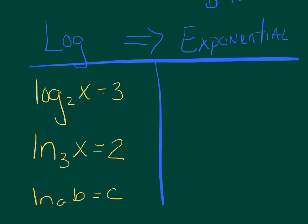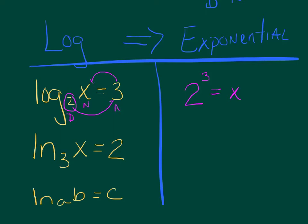We'll go a little log to exponential form and see what you've got for a review. These are obviously in log form — they all have the word log, whether it's natural log or log. Exponential form should have an exponent. I'll do the first one with you, then you're on your own. Begin at the base, outside, and then inside — so I'm getting 2 to the 3rd equals x. Pause it, get the next two. Hopefully those match up; if you've got questions, see us in class.